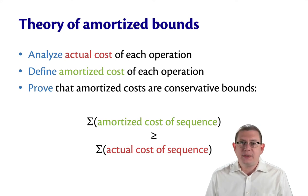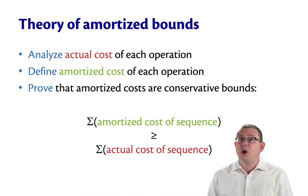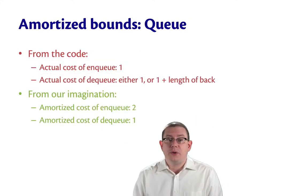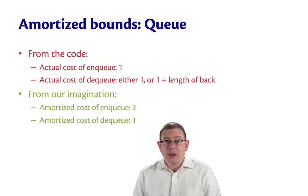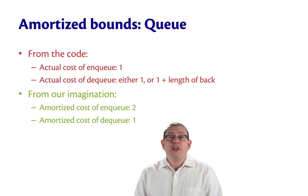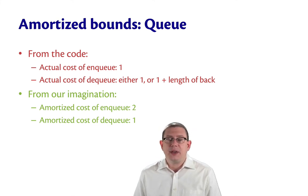It means you are overestimating in the amortized cost what the actual costs are going to be. It's important to get it wrong in that direction so that, in the worst case, we're overestimating the cost of operations, not underestimating. So let's return to our example of two-list queues. By actually analyzing the code, the actual cost of an enqueue is going to be 1 because we have to cons onto a list. The actual cost of a dequeue is either 1 because we take the tail of a list, or it's 1 plus the length of the back if the front is empty and we have to reverse the back.